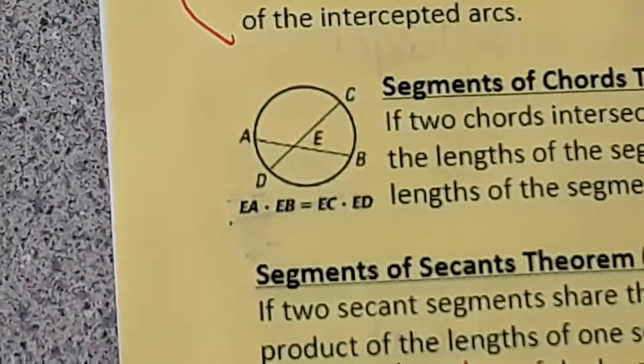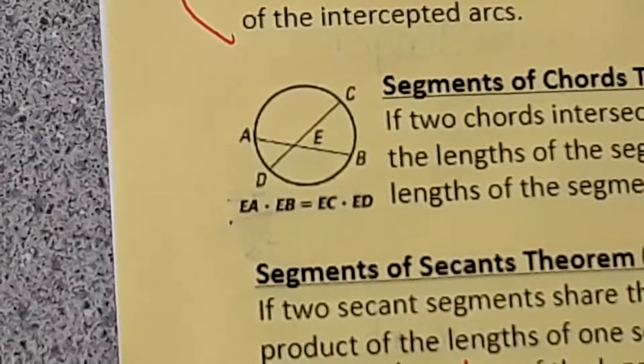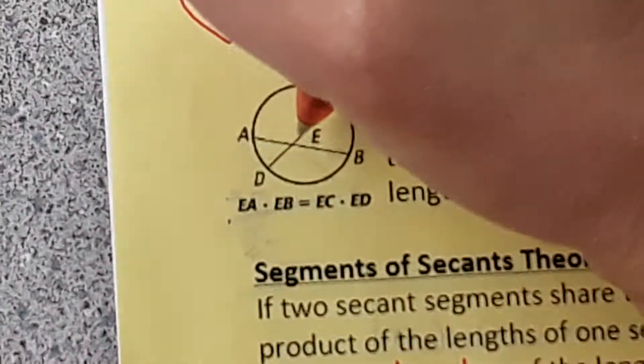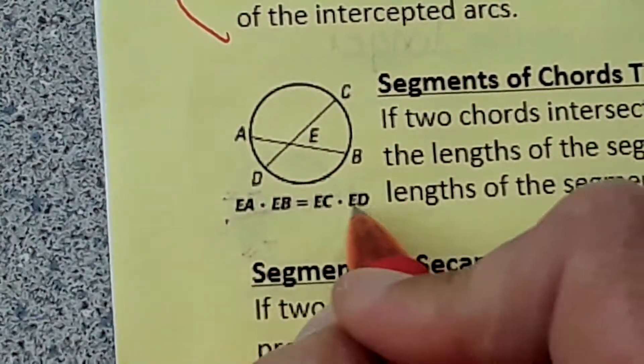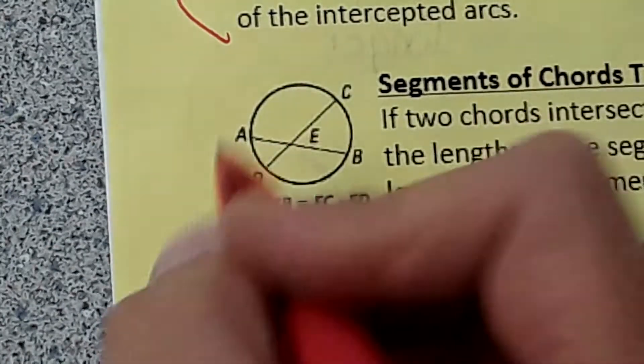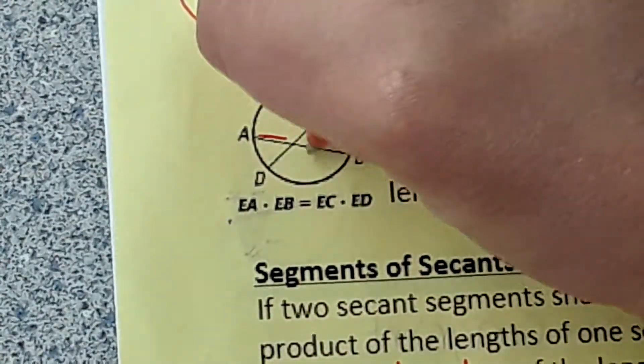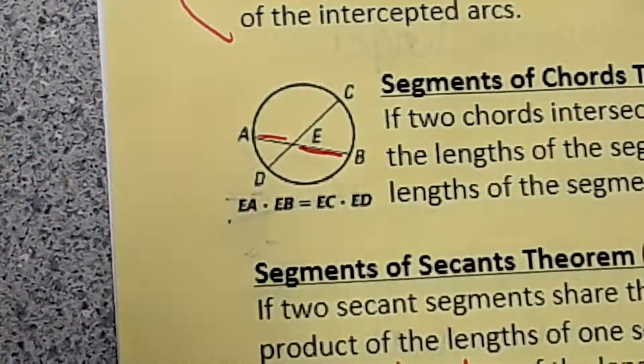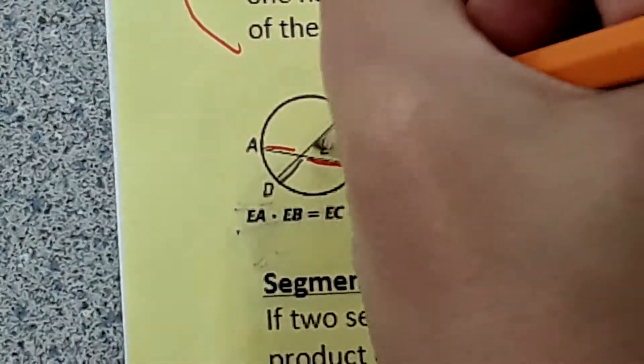I'm going to zoom in just on the pictures and focus on the concept. Here it shows an equation that says if you multiply EA times EB, it will equal EC times ED.